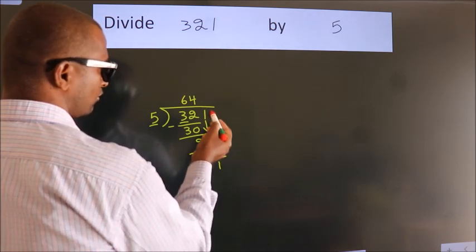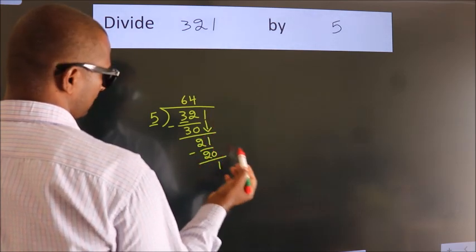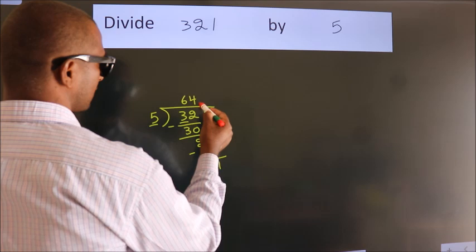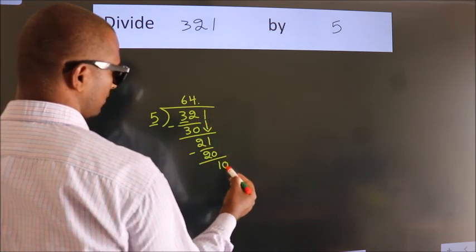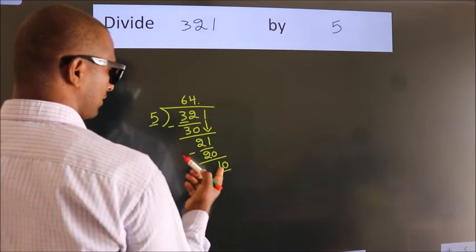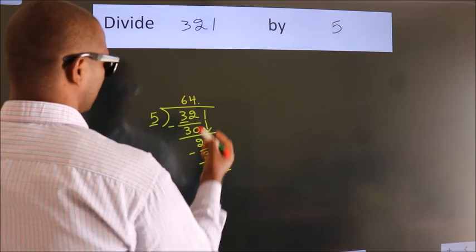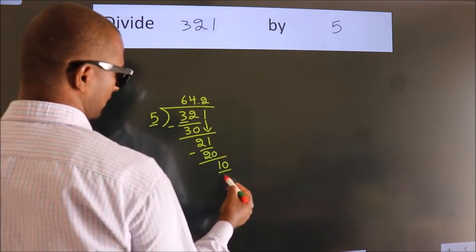After this, no more numbers to bring it down. So what we do is we put dot, take 0. So 10. When do we get 10? In 5 table. 5 twos, 10.